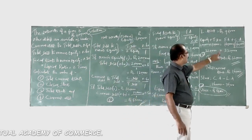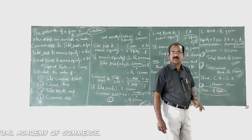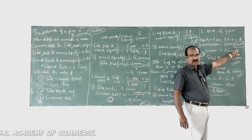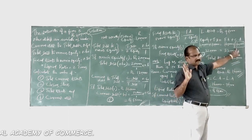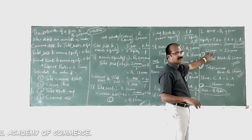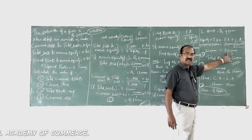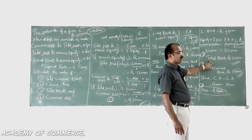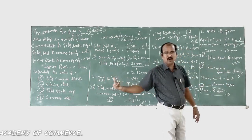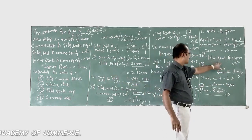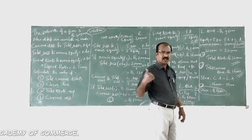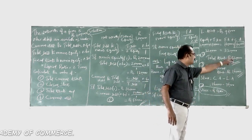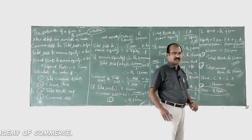Since fixed assets = 1 lakh 60,000 and total of the balance sheet = 3 lakh 20,000, the balancing figure for current assets is also 1 lakh 60,000. Total assets = 3 lakh 20,000 — that answers the third question. Total current assets = 1 lakh 60,000 — that answers the first question.